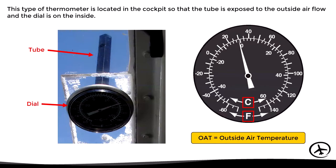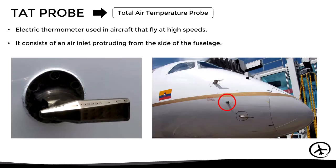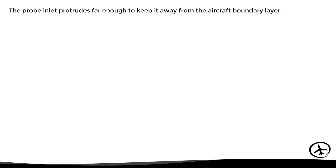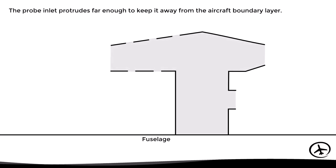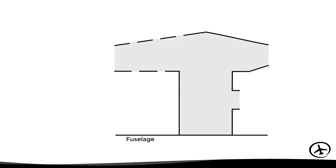Let's move on to the total air temperature probe. This is a type of electric thermometer mainly used in aircraft that fly at high speeds, and it consists of an air inlet that protrudes from the side of the fuselage, as we can see in these images. The probe inlet protrudes far enough to keep it away from the aircraft boundary layer, since due to friction the temperature value changes within that layer, and the objective is to measure the free airflow temperature.